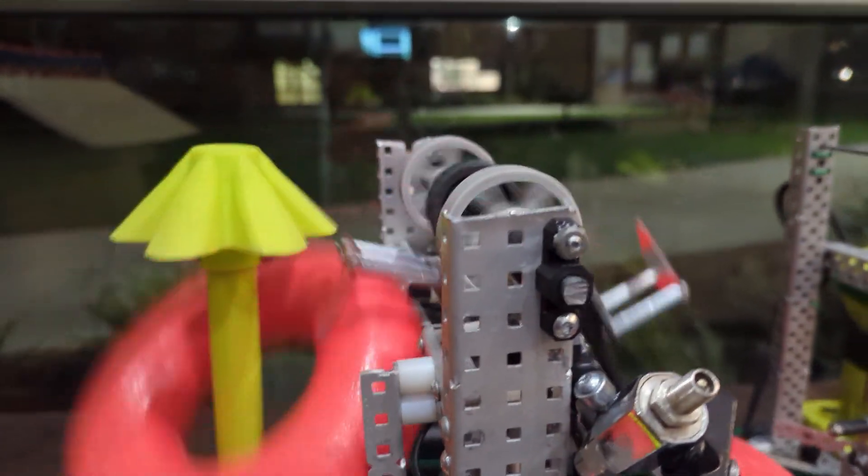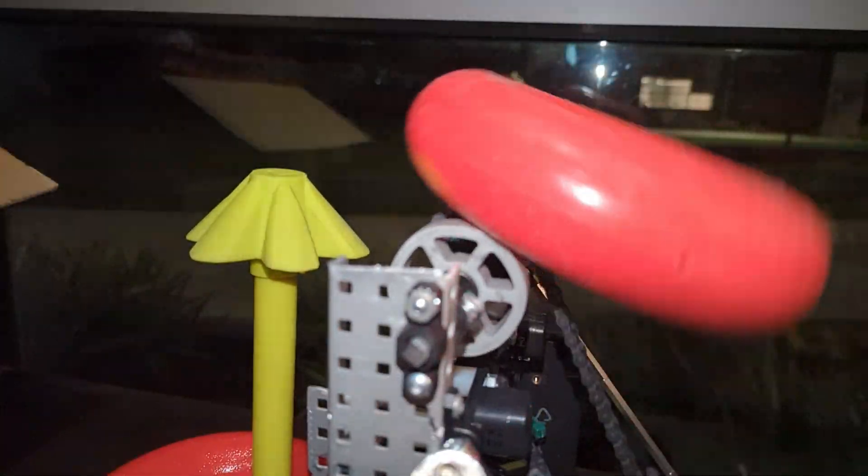The best way to know what the problem is with flipping the rings onto the stake is to take a slow motion video and see what's happening. If you're thinking this is something you might want to build, click that link in the description below and I'll send you an email with all the pictures and videos you need to get this working on your robot.